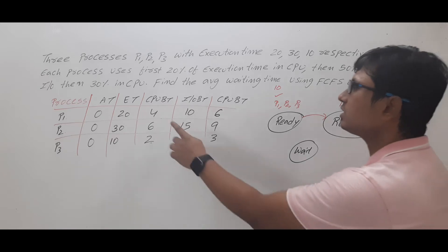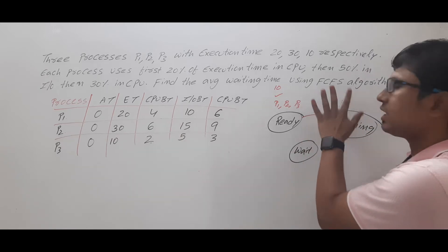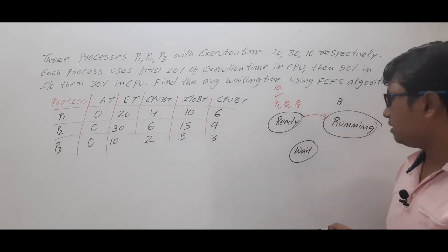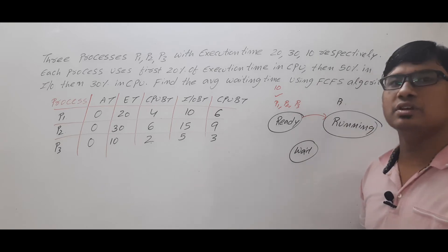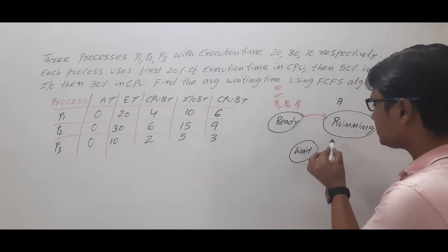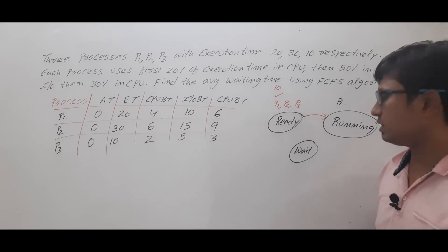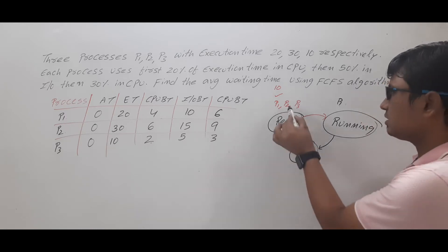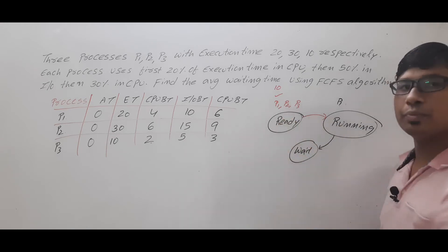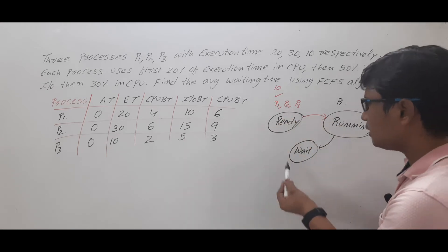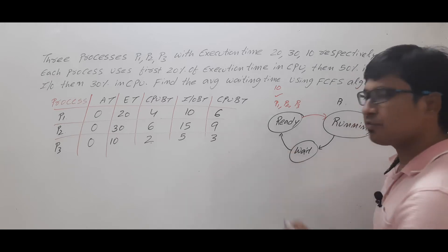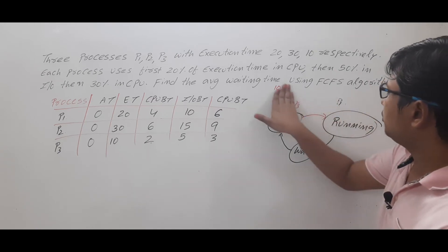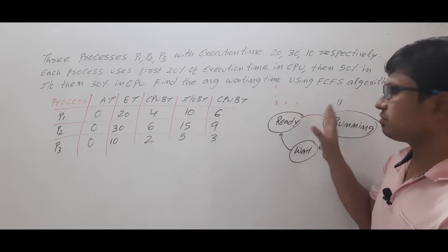But here, process P1 needs 4 units of CPU time first, then 10 units of IO time. Once any process needs an IO request, it will be sent to the waiting state so that the CPU can run another process. Once the IO request is completed, the process will go back from the wait state to the ready state. With this explanation, let me solve this question.